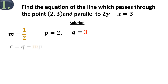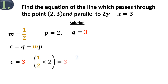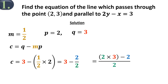Using the formula c equals q minus mp: c equals 3 minus one-half times 2, which will be simplified as shown. In simplifying, you don't have to reduce the fraction. c will be equal to the numerator of the fraction, which is 4 in this case. So our required equation is 2y minus x equals 4.